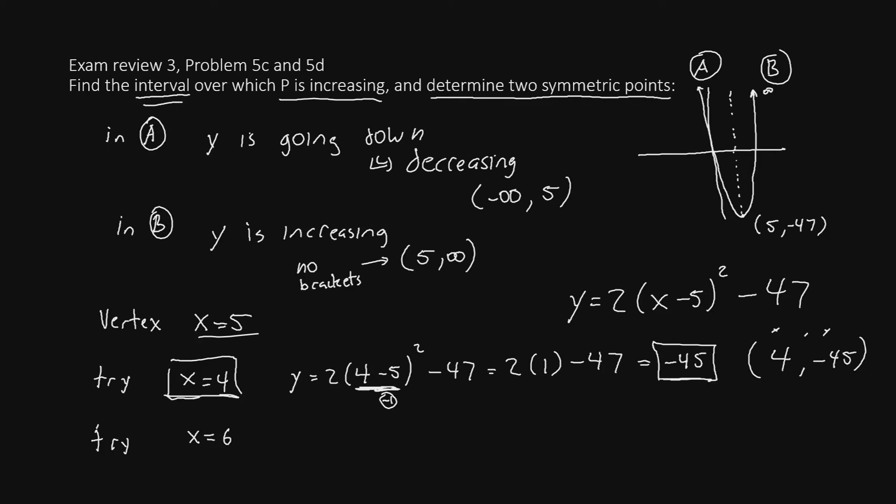Now let's try x equals 6. What should happen is that we should get the same y value. Let's find out. We'll have y equals 2 times 6 minus 5 squared, minus 47. If we do the math, 6 minus 5 is just 1. Squared is still 1. So look what we have here. 2 times 1 minus 47. We already know that's negative 45.